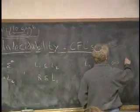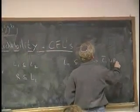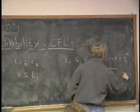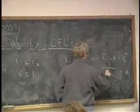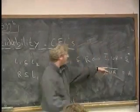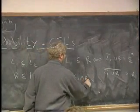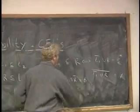I'll write this out. Not L1 union R equals everything. And that's the same as the complement equaling nothing. And that's the same as L1 intersect the complement of R equaling nothing.